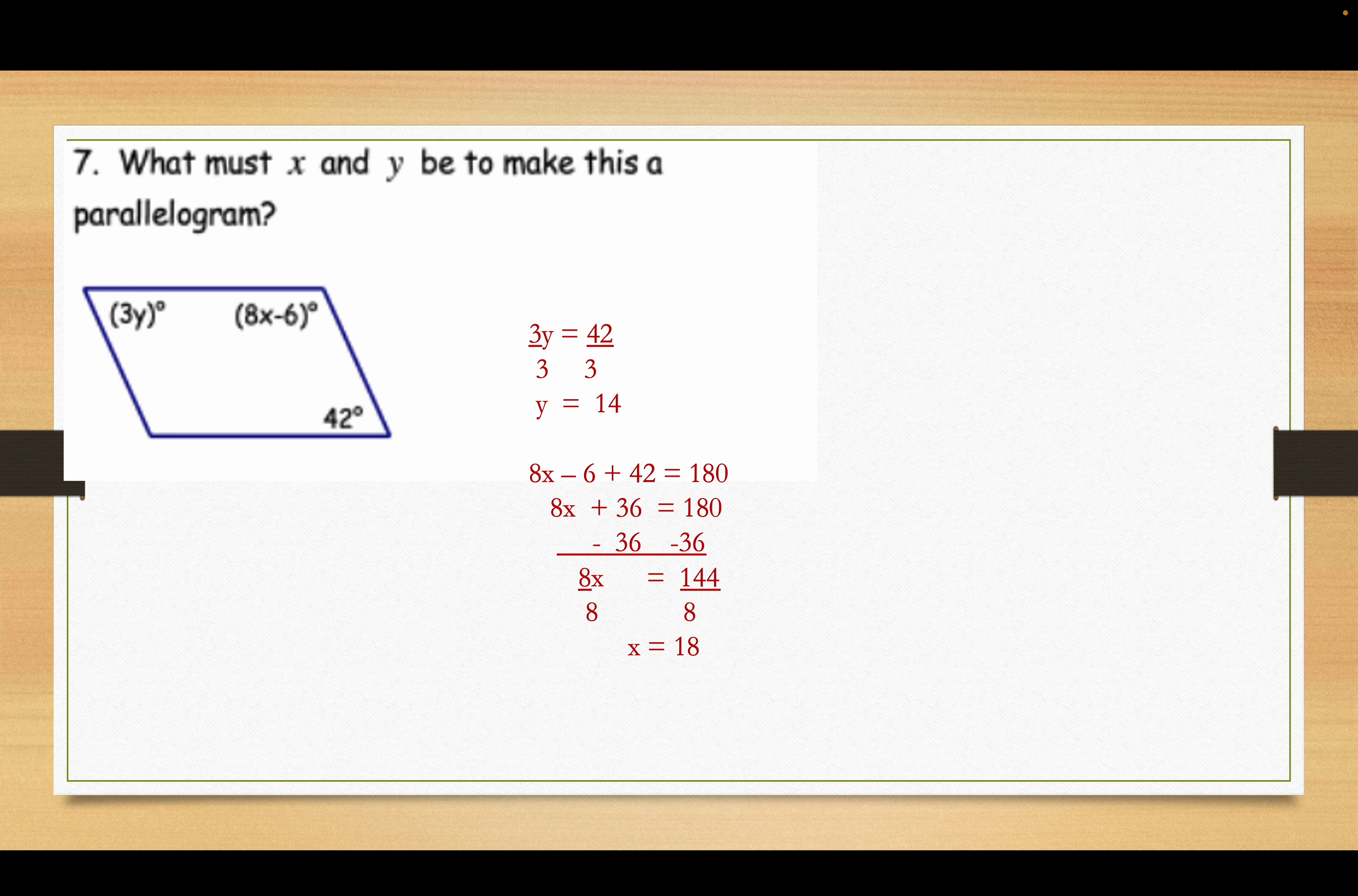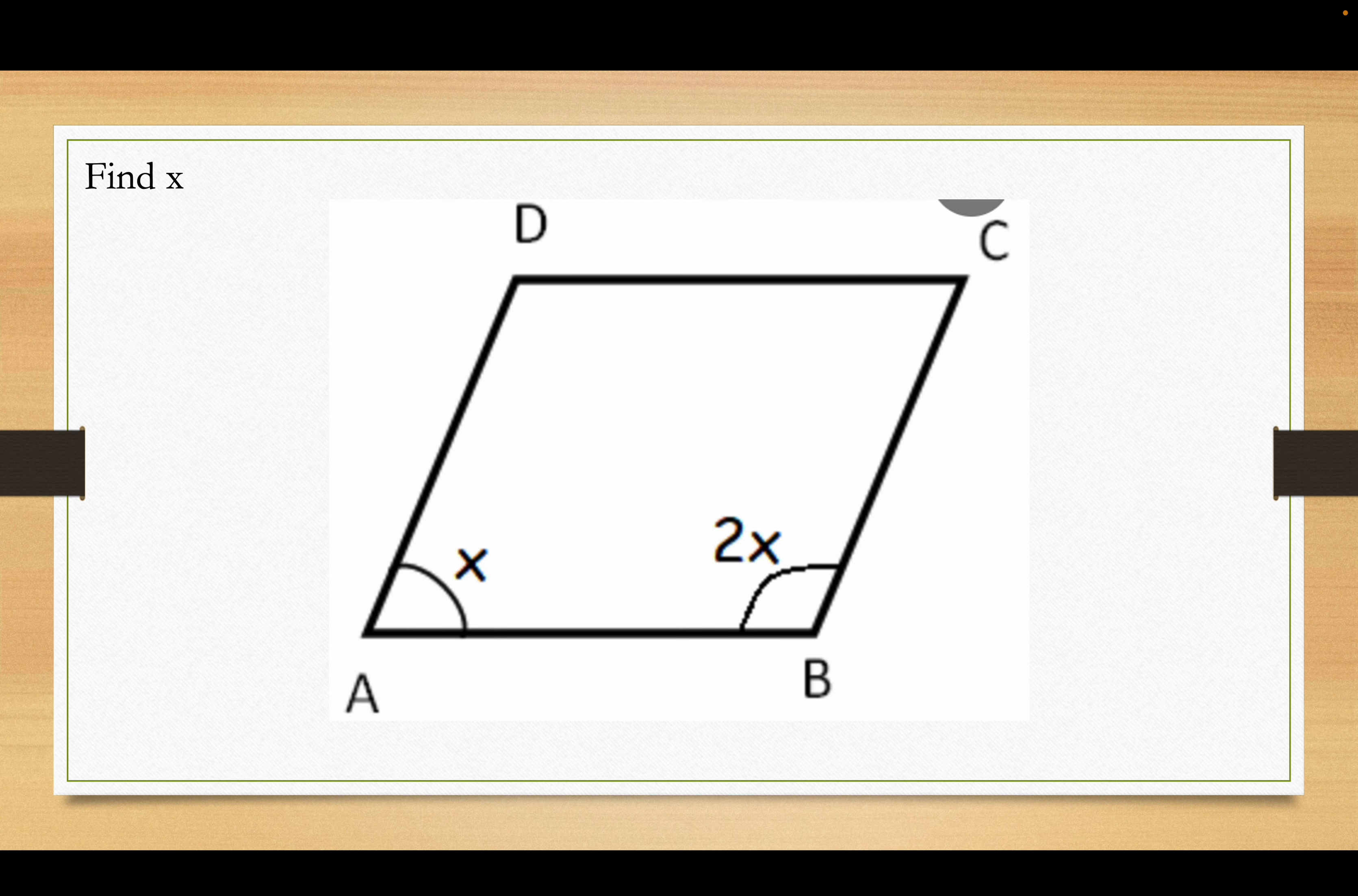Oh, excuse me. All right. Find X in this one. This time, you know it's a parallelogram. Find X. Okay. 1X plus 2X has got to equal 180. 3X is 180. X is 60. Pretty straightforward.